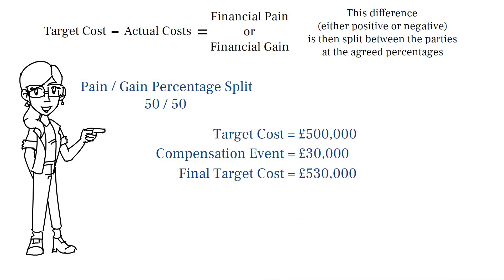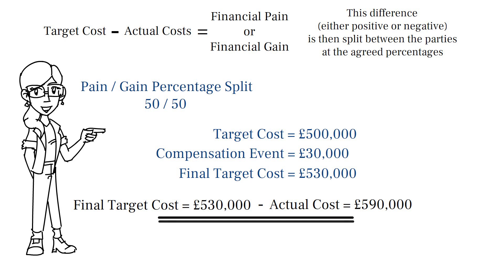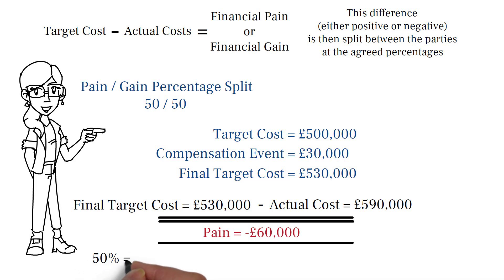There were other complications and issues that did not constitute a compensation event, and the final actual costs assessed by the client amounted to £590,000. As the actual costs are over the final target cost, including the compensation events, the financial pain incurred must be calculated. To do this, you minus the actual cost from the final target cost, leaving £60,000. The 50-50 percentage is then applied — 50% of £60,000 is £30,000.